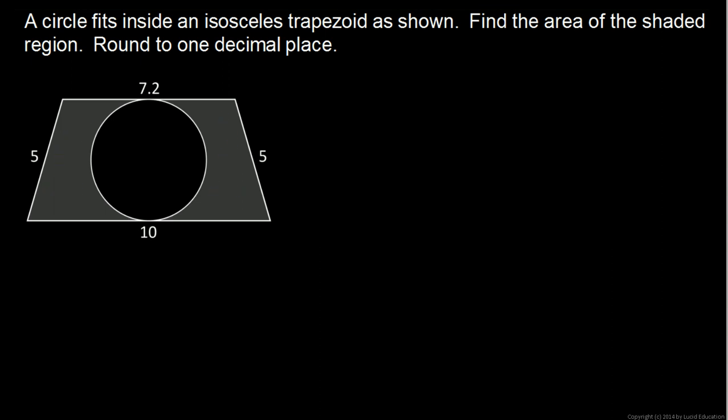Now to find that area, we will find the area of the trapezoid and subtract the area of the circle. And what we have left after subtracting the circle will be the answer, what we're looking for. So we'll start by finding the area of the trapezoid.